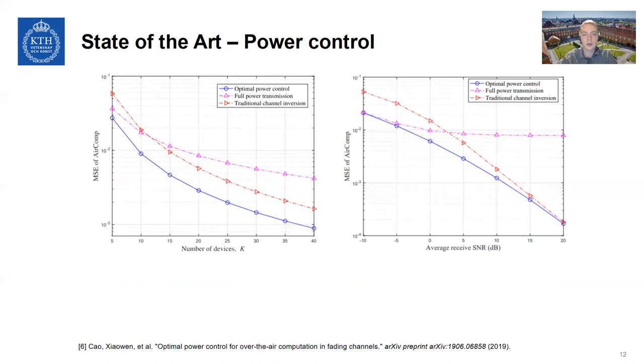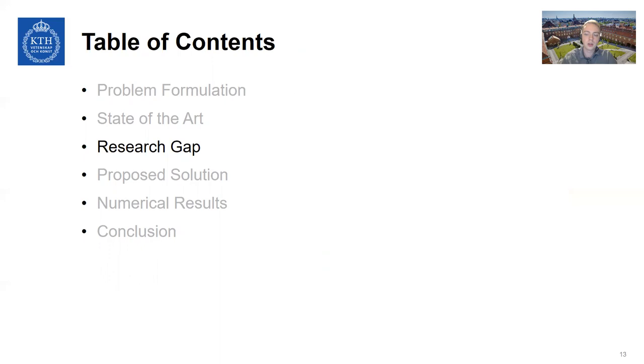And this idea has generated some good results. We can see here that compared to these basic baselines, you can see about four times improvement over doing a more basic scheme. However, the optimal power control schemes have for many scenarios already been found. And we're still at some sort of error floor that we can't go beyond, which takes us directly to the research gap.